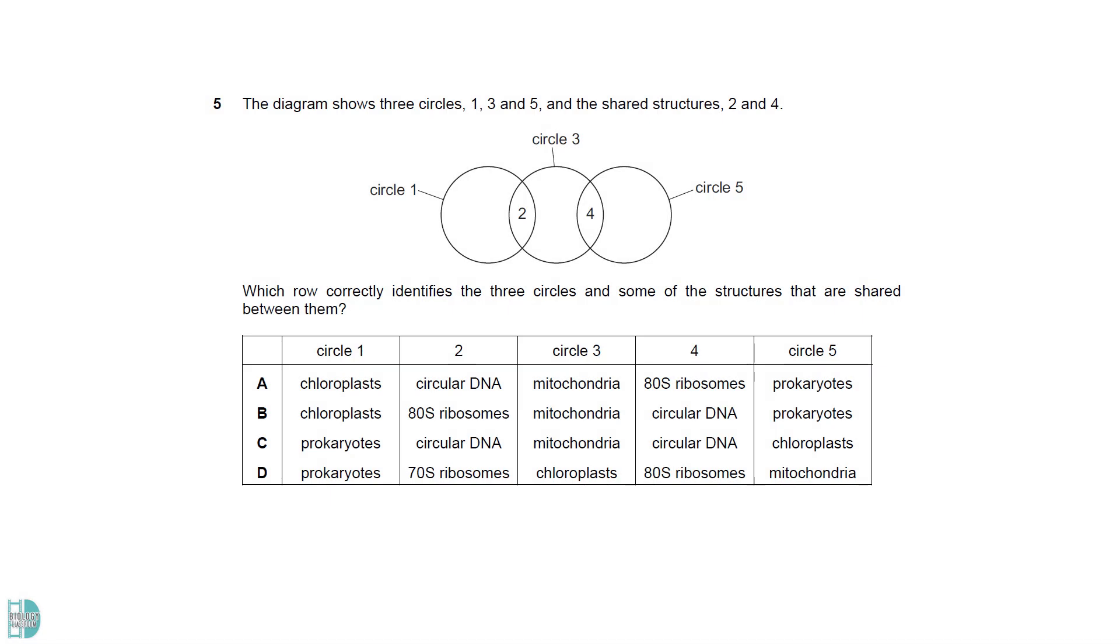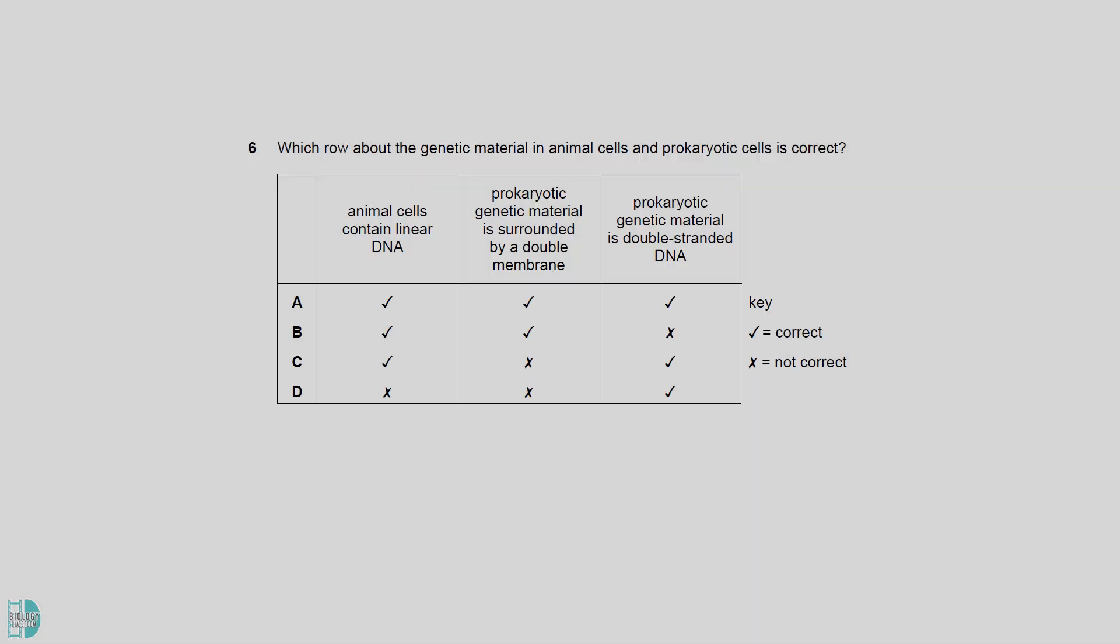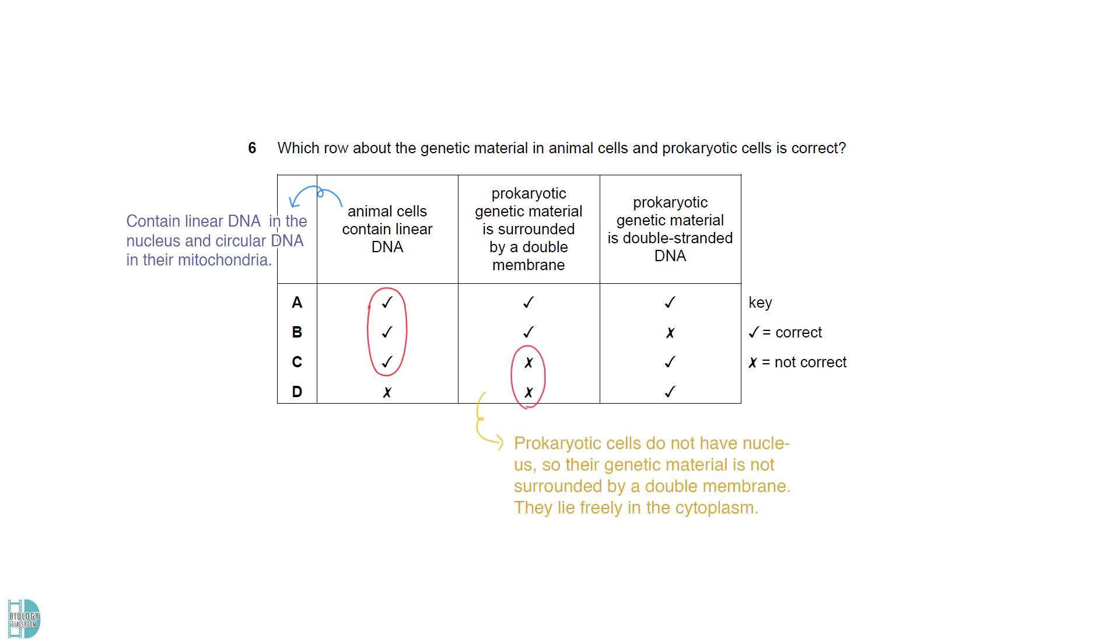Chloroplasts, mitochondria, and prokaryotes have circular DNA and 70S ribosomes. None of them contain 80S ribosomes, so A, B, and D are wrong. Animal cells contain linear DNA in the nucleus and circular DNA in their mitochondria. A prokaryotic cell does not have a nucleus. Its genetic material is not surrounded by a double membrane. They lie freely in the cytoplasm. Both eukaryotic cells and prokaryotic cells have double-stranded DNA.